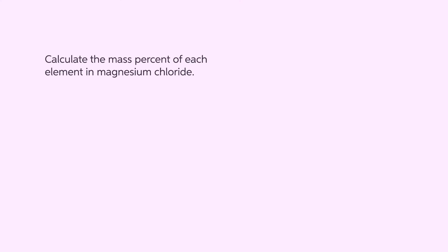Sometimes we only have a chemical formula. While we haven't been given masses to put in our formula, we can find the percent composition of each element. Calculate the mass percent of each element in magnesium chloride. First, we need the chemical formula.